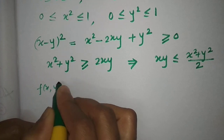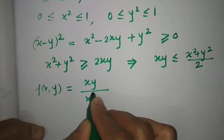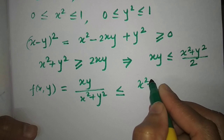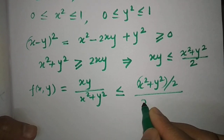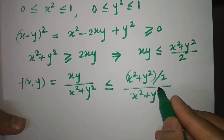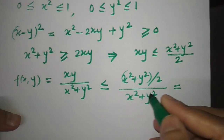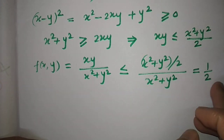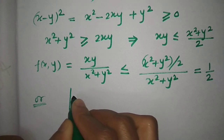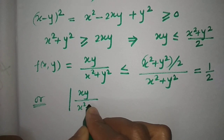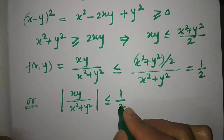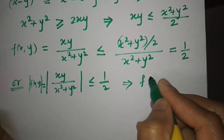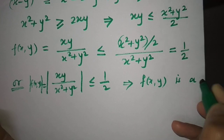Now f(x,y) = xy/(x²+y²). Using xy ≤ (x²+y²)/2, we get f(x,y) ≤ (x²+y²)/2 divided by (x²+y²), and canceling x²+y² gives f(x,y) ≤ 1/2. Taking the modulus, |xy/(x²+y²)| ≤ 1/2, which means f is a bounded function.